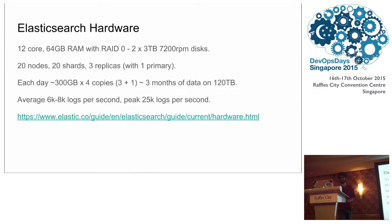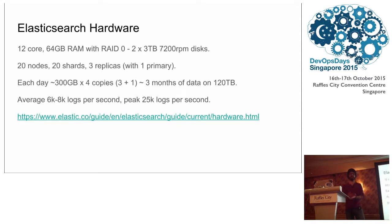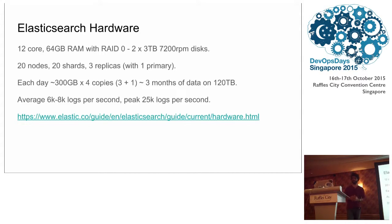This is our Elasticsearch hardware: 12 cores, 64 GB of RAM with RAID 0, 23 terabytes of 7,200 RPM disks. There are 20 nodes. The number of shards for each index should be greater than or equal to the number of nodes — this distributes search requests across the entire fleet. We keep three replicas, meaning we can afford to lose three machines at a time without losing any data. Each day is about 300 GB, so that translates to roughly three months of data — 120 terabytes of disk space.